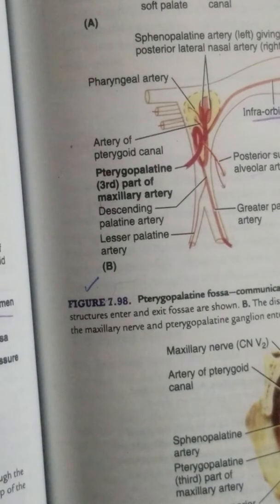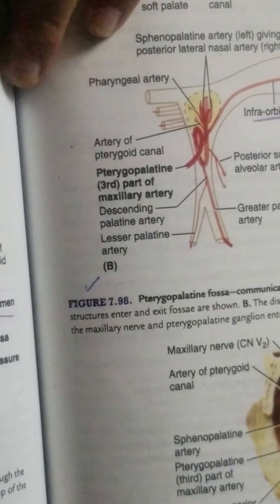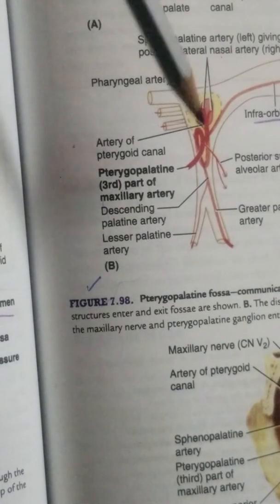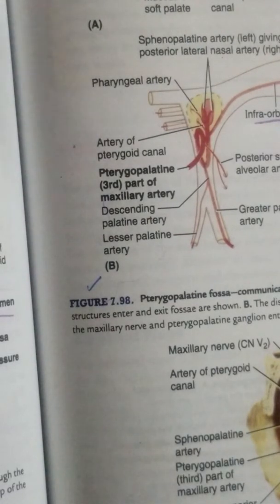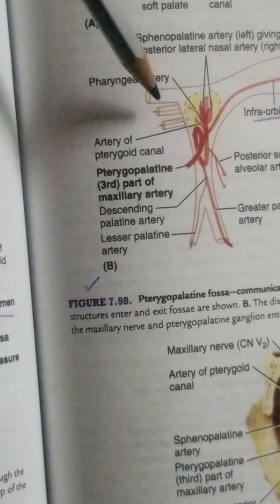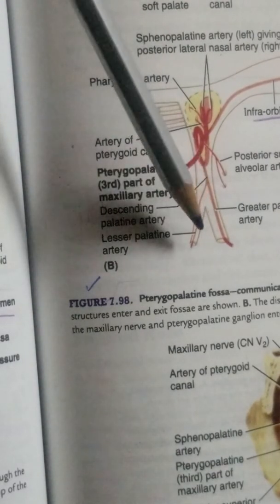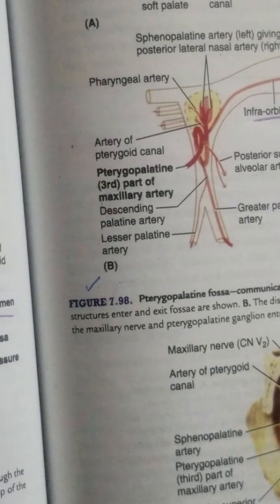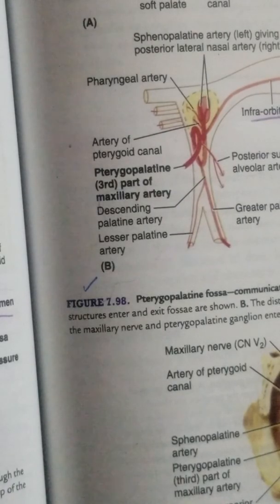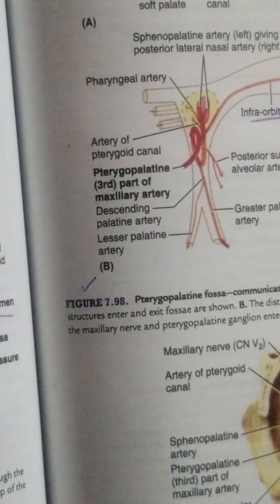So the third part of the maxillary artery gives the infraorbital and posterior superior alveolar branches before entering the fossa, and inside the fossa gives the artery to the pterygoid canal, the pharyngeal artery, the greater and lesser palatine arteries, and the sphenopalatine artery. That completes the branches of the third part of the maxillary artery.